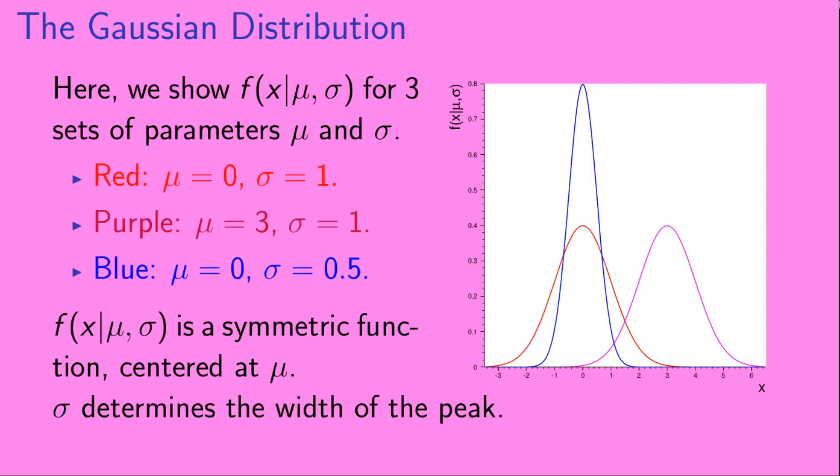Okay, so here we show the Gaussian distribution for three sets of parameters, mu and sigma. First we have the red curve. This has mu equals zero and sigma equals one, and you can see that it has a peaking structure around x equals zero. Next, in the purple, we have mu equals three and sigma equals one. This curve looks the same, except it's shifted over and centered around x equals three. And lastly, we have the blue curve, which has mu equals zero, sigma equals 0.5. Now, this curve is centered around x equals zero, but we see that it's narrower than our red curve. So, the Gaussian distribution is a symmetric function centered around mu, and sigma determines the width of the peak.